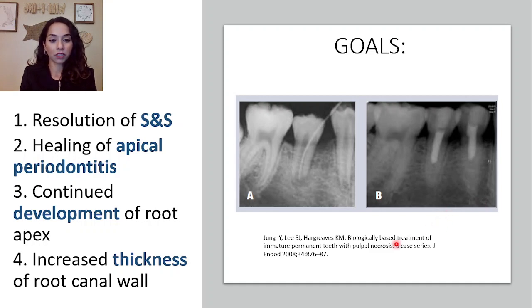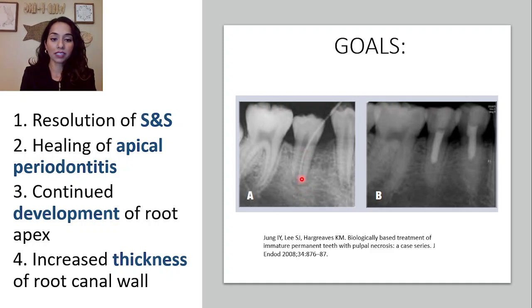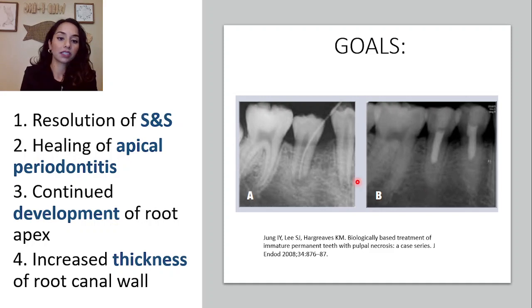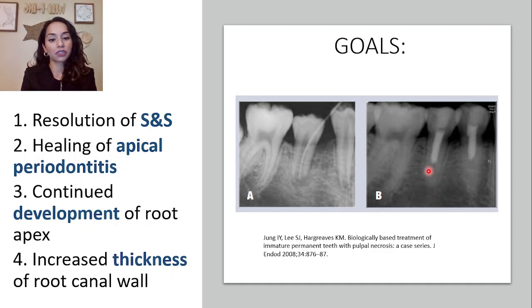In this article published by Dr. Hargreaves and colleagues in 2008, we can see evidence of radiolucency around teeth 28 and 29, an open apex, and thin dentinal walls. After performing REPs, we see healing of the apical periodontitis indicated by decreased radiolucency, closure of the root apex, and increased thickness of the root canal walls.